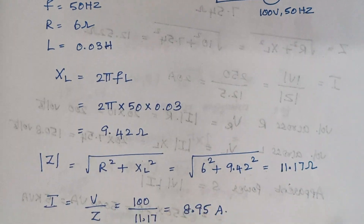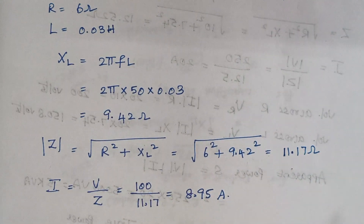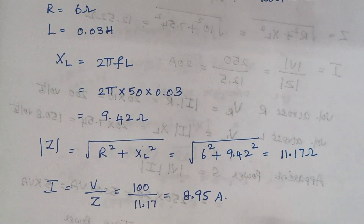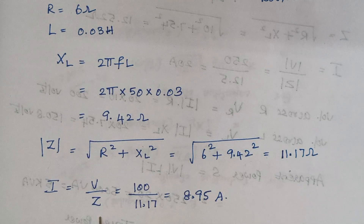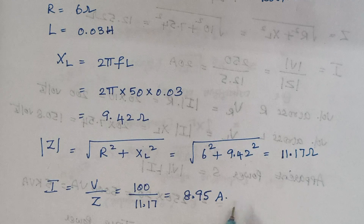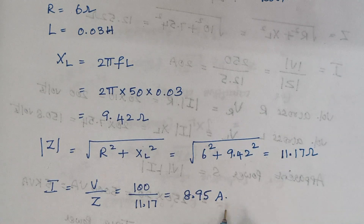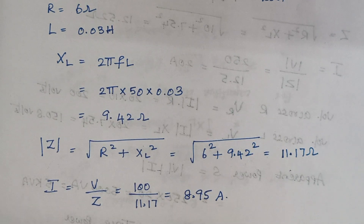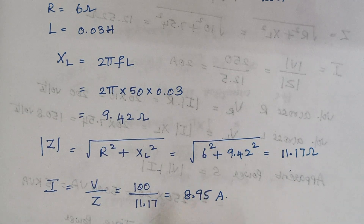Current I is nothing but the ratio of V by Z. We know V as 100 and Z as 11.17, so that gives the answer as 8.95 amps. So here we have calculated the current.